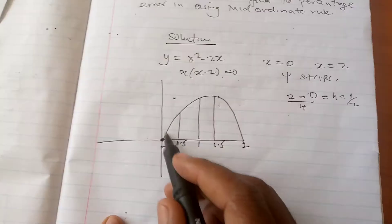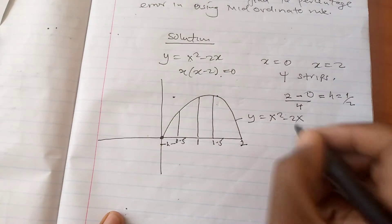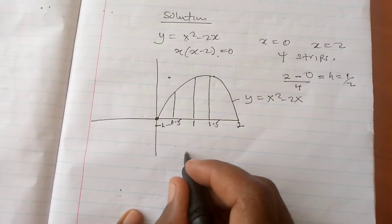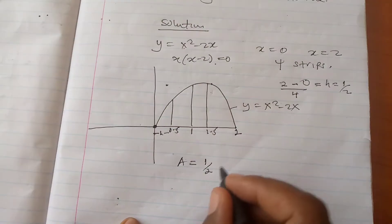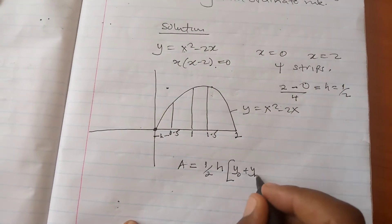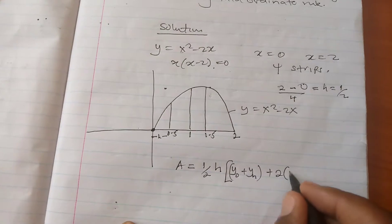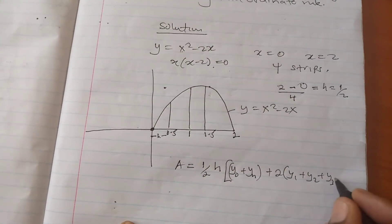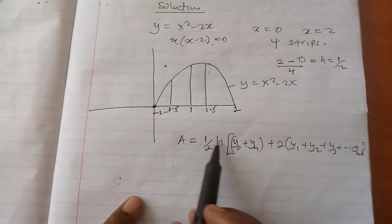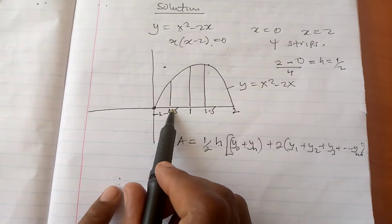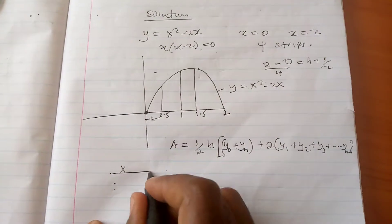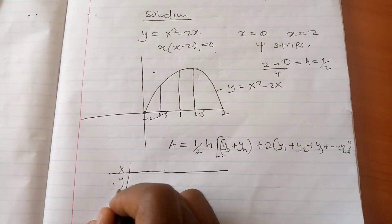Now we start with the trapezium rule. The formula says: Area equals one half times h times (y₀ plus yₙ plus 2 times (y₁ plus y₂ plus y₃ plus ... plus yₙ₋₁)), where h is the width of each strip.